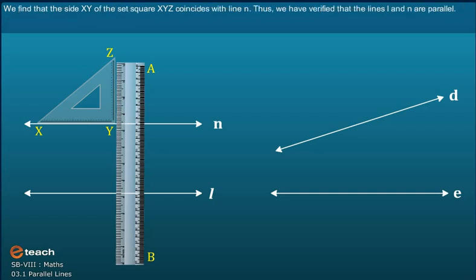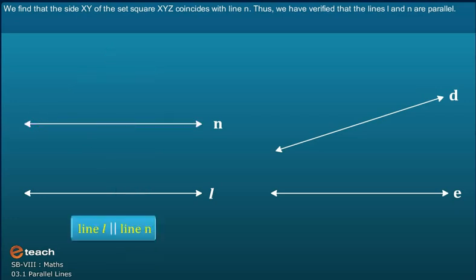We find that the side XY of the set square XYZ coincides with line N. Thus, we have verified that line L and N are parallel.